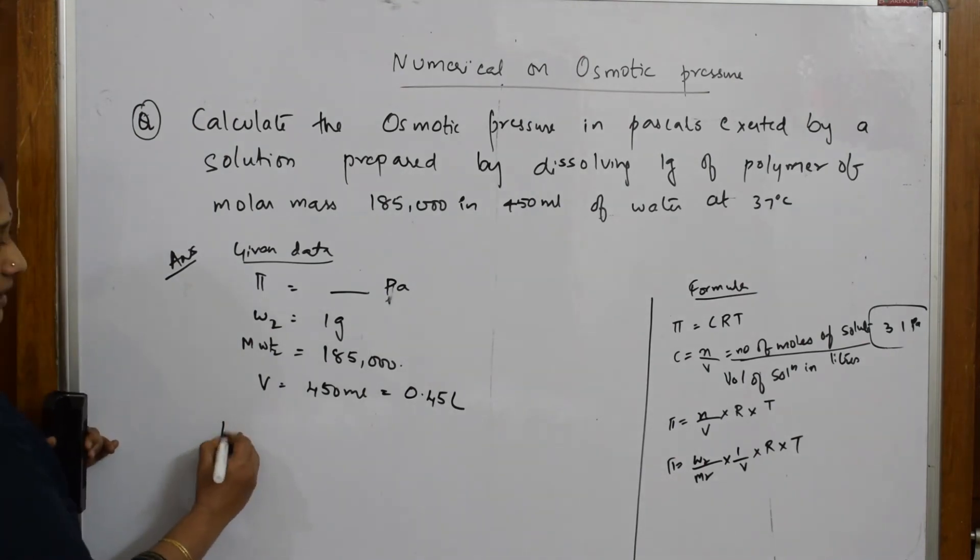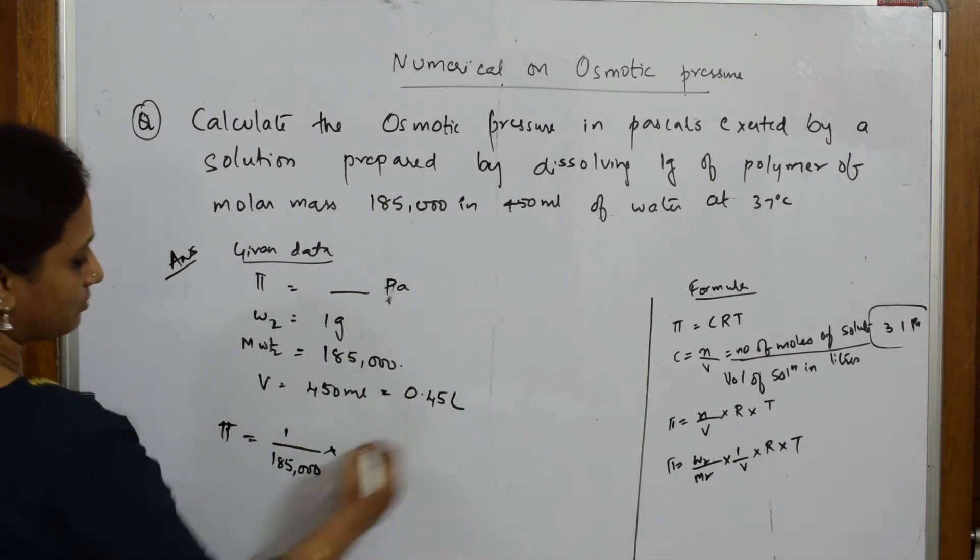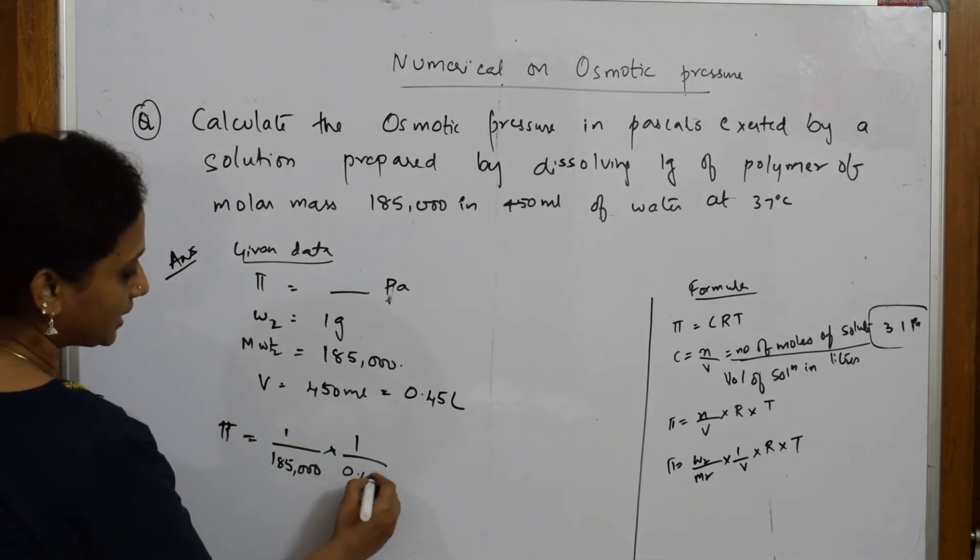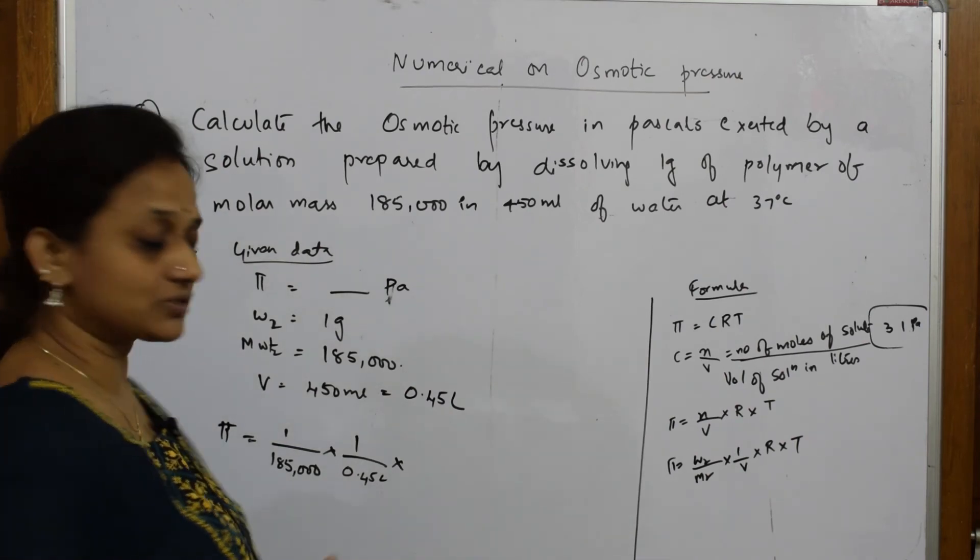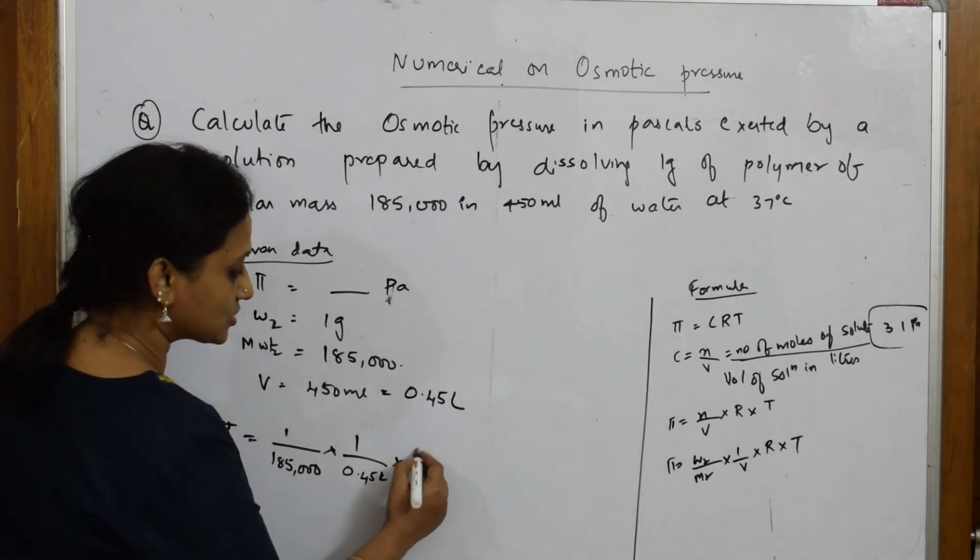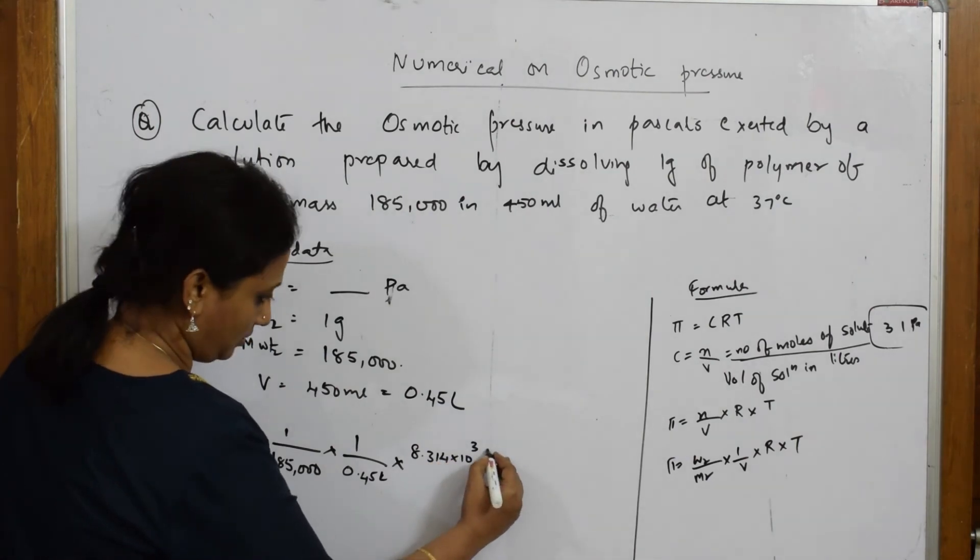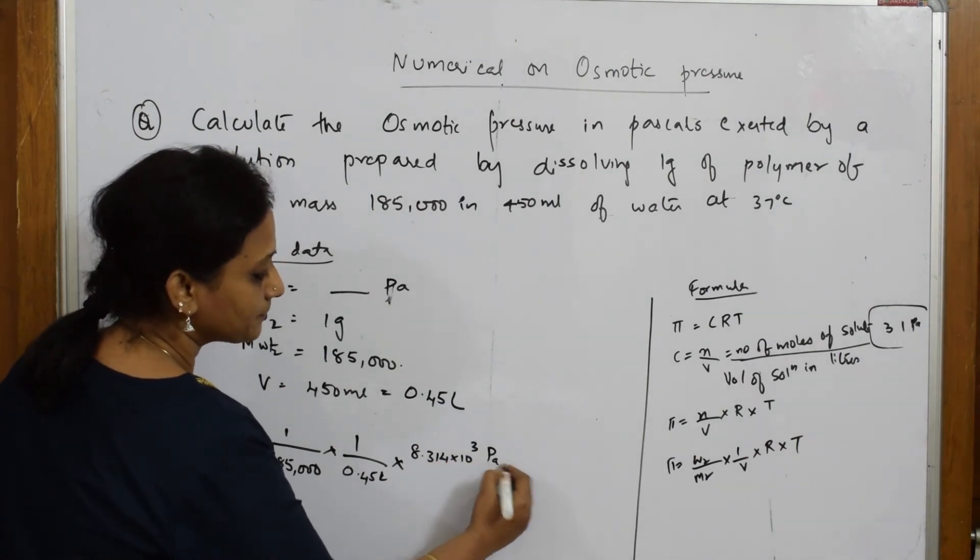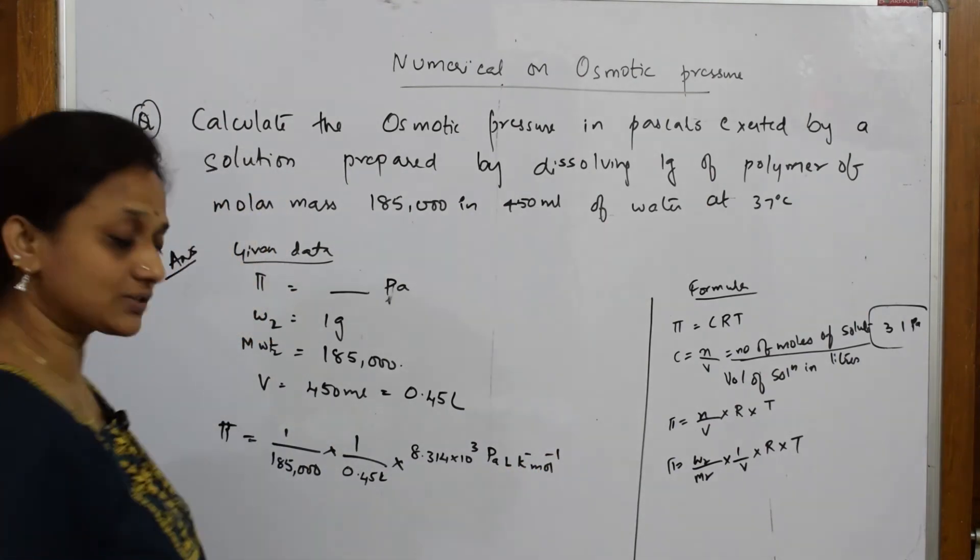Now, substituting the sum. Pi is equal to what is W2 given to us? 1 divided by 185,000 into 1 by V is 0.45 L into gas constant R is universal gas constant and you have taken a liter. So it is 8.314 into 10 to the power of 3 Pascal liter Kelvin inverse mole inverse. This is your universal gas constant.